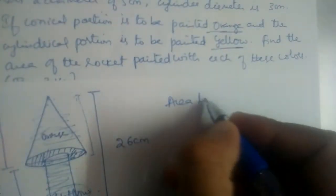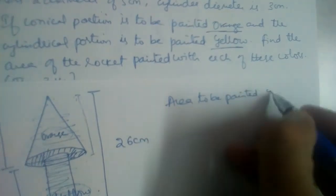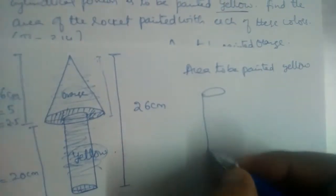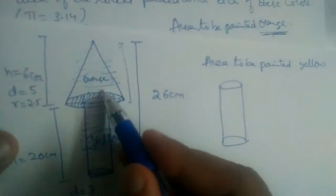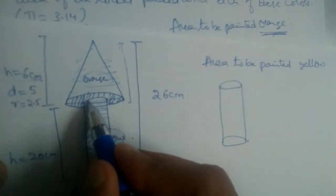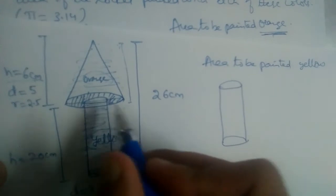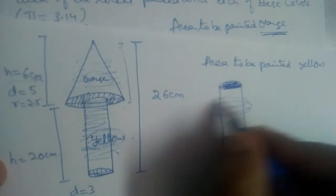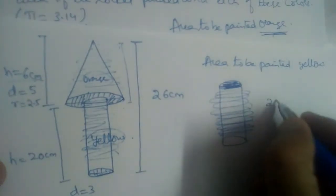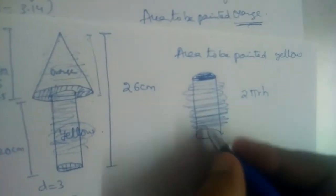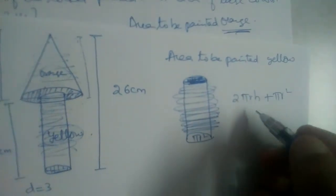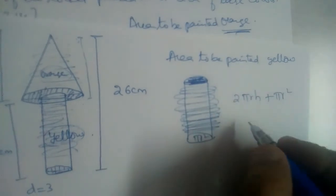Let us first find the area to be painted yellow. If we draw the cylinder separately, the cone and cylinder are attached, so the top face of the cylinder is not exposed. We paint the curved surface area of the cylinder, which is 2πrh, and one circle πr², so total yellow area = 2πrh + πr².